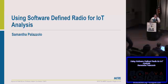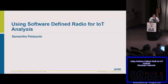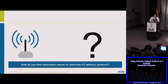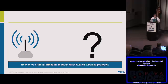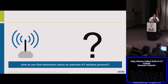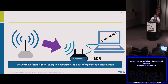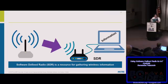Hello, good morning. My name is Samantha Palazzolo, and today I'm going to talk about using software-defined radio to analyze IoT devices — specifically the wireless protocols of IoT devices. You have a device: it can be anything from an IoT hub, a light bulb, a door lock, and you're not really sure what's going on wirelessly — what kind of information it's sending, what's the format. Software-defined radio, or SDR, is a resource for gathering information on what's being sent over the air.